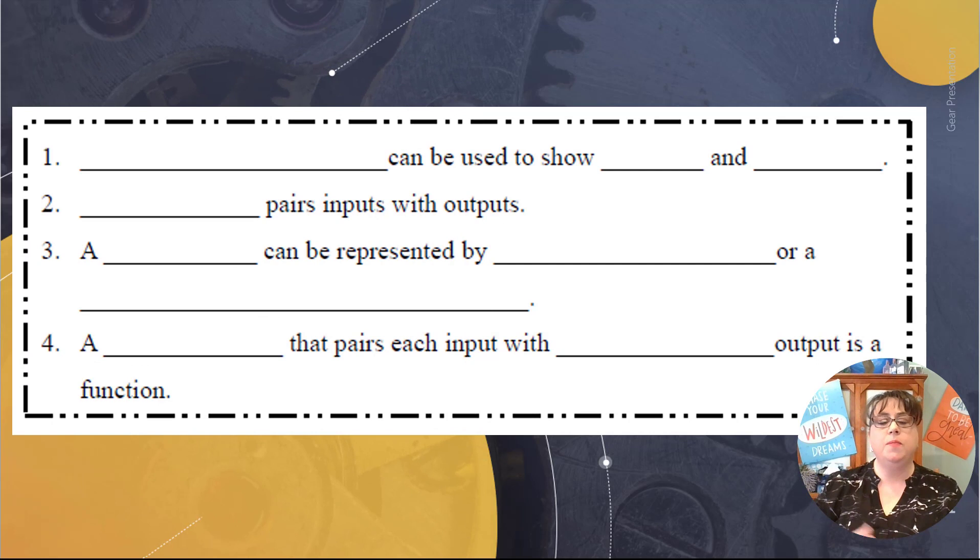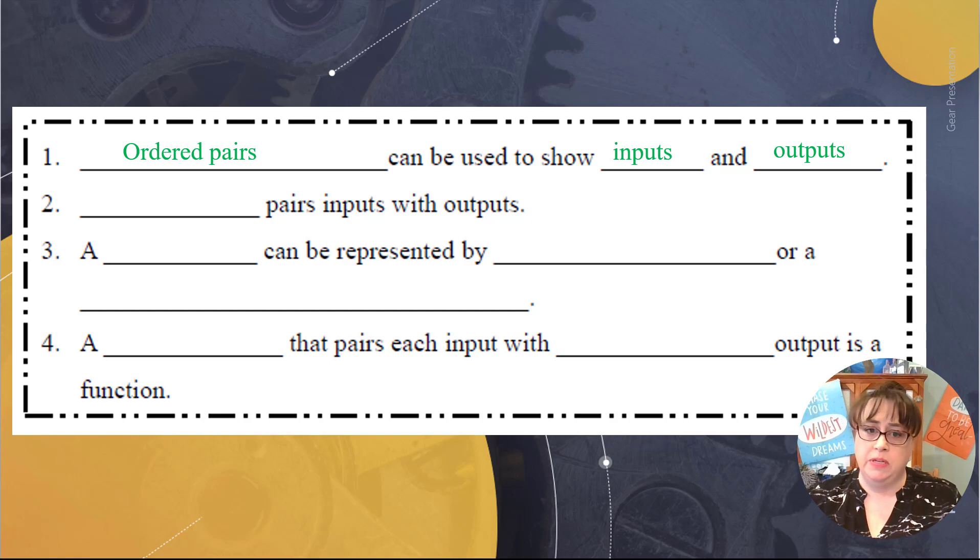So let's get started by using some definitions. Ordered pairs can be used to show inputs and outputs. Inputs and outputs are related to one another with relation pairs. So somehow there's something going on with the input and output, and it's up to us to figure out what that is.